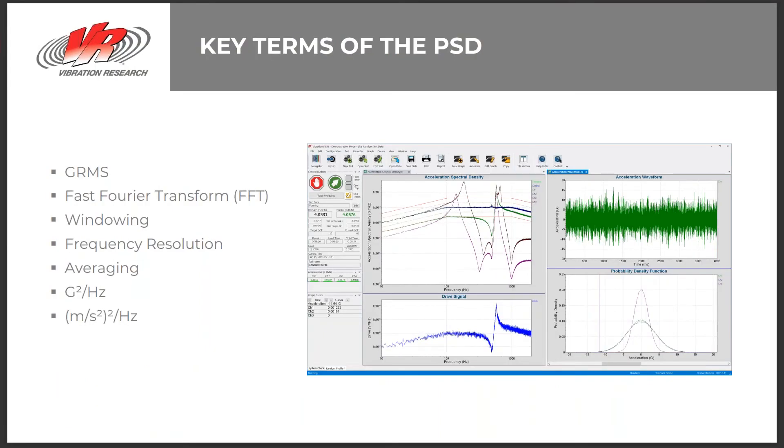A few quick definitions before we go further. GRMS we defined in the previous slide. FFT, the fast Fourier transform, is a computer method of shifting data from the time domain to the frequency domain. Windowing is a method that shapes the data being used to generate or calculate an FFT. Frequency resolution is set by a number of analysis lines to generate both a PSD and an FFT. Averaging refers to a method of combining a series of FFTs to generate a PSD. And G squared per hertz and meters per second squared per hertz are the units for an acceleration spectral density plot.